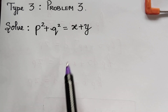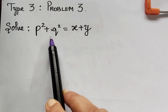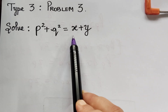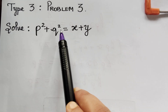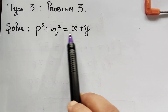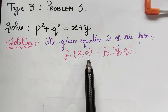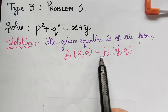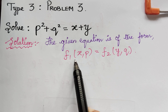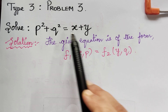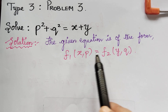We see that only x, y, p, and q are present and z is not present. So, this given equation is of the form f1(x, p) is equal to f2(y, q). This given equation is in this form.